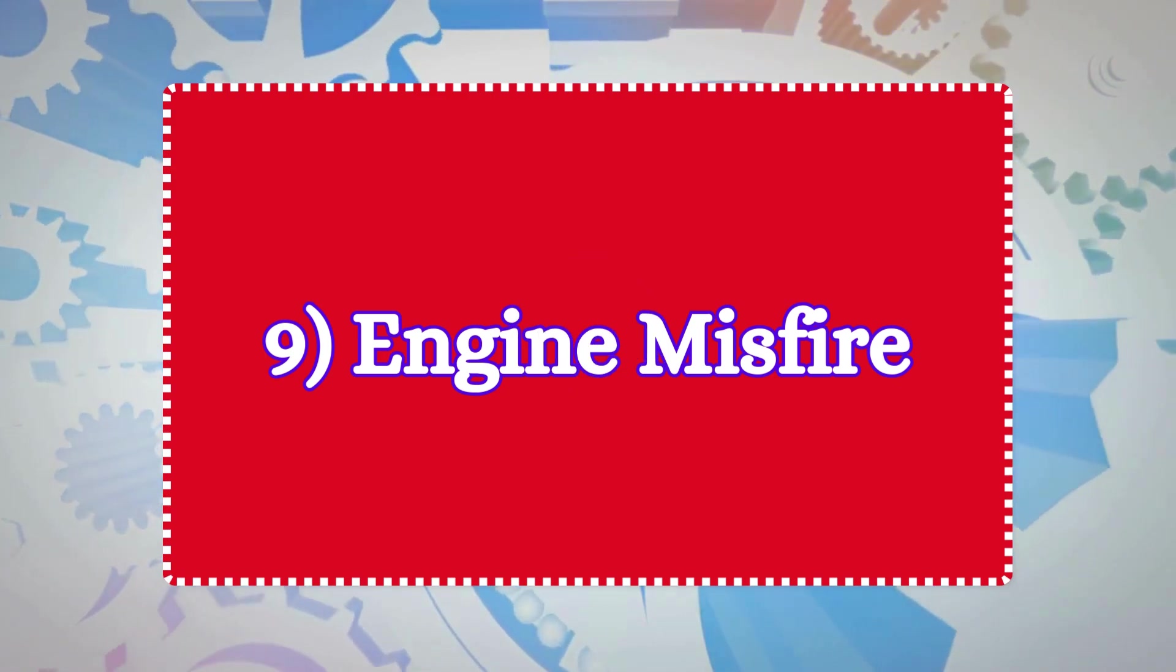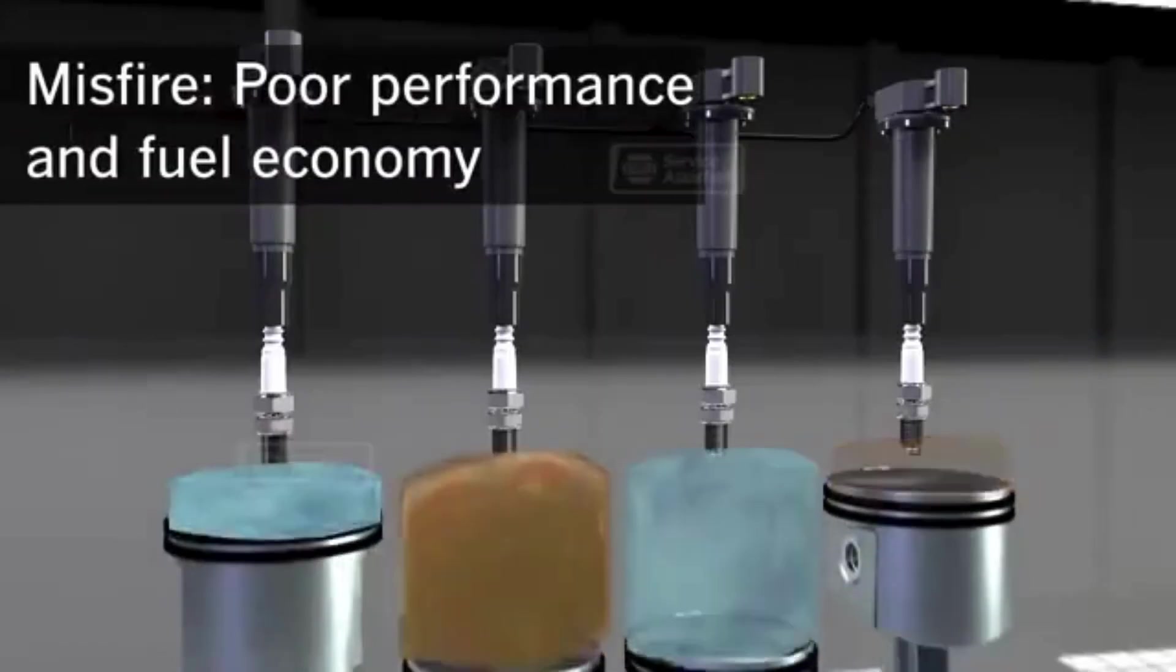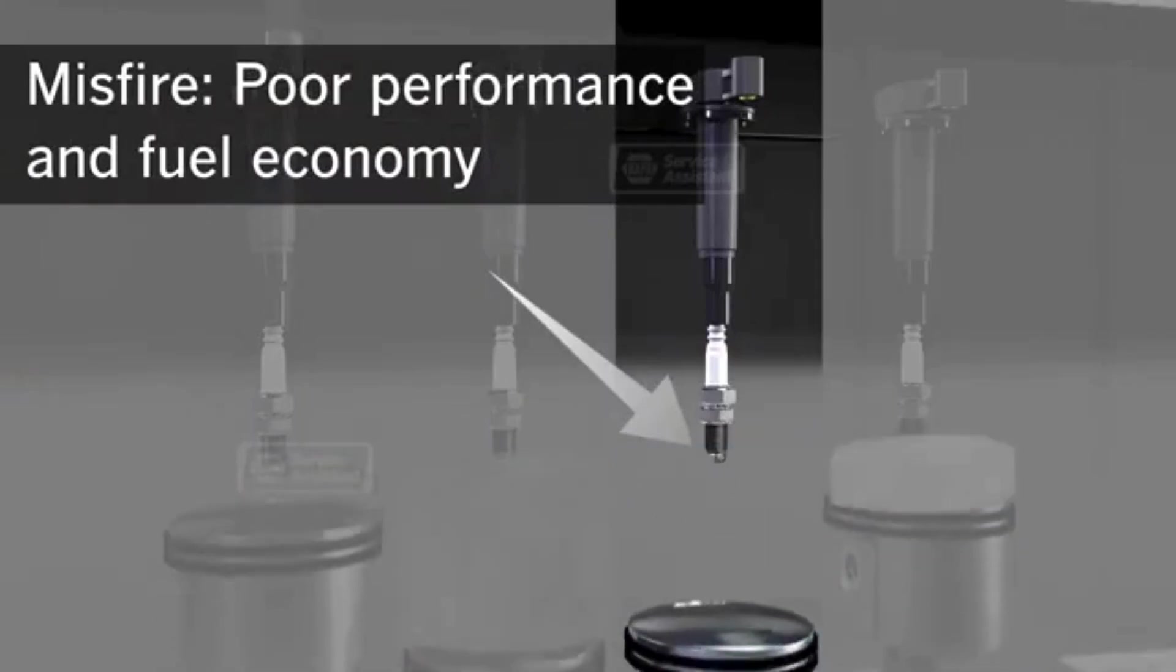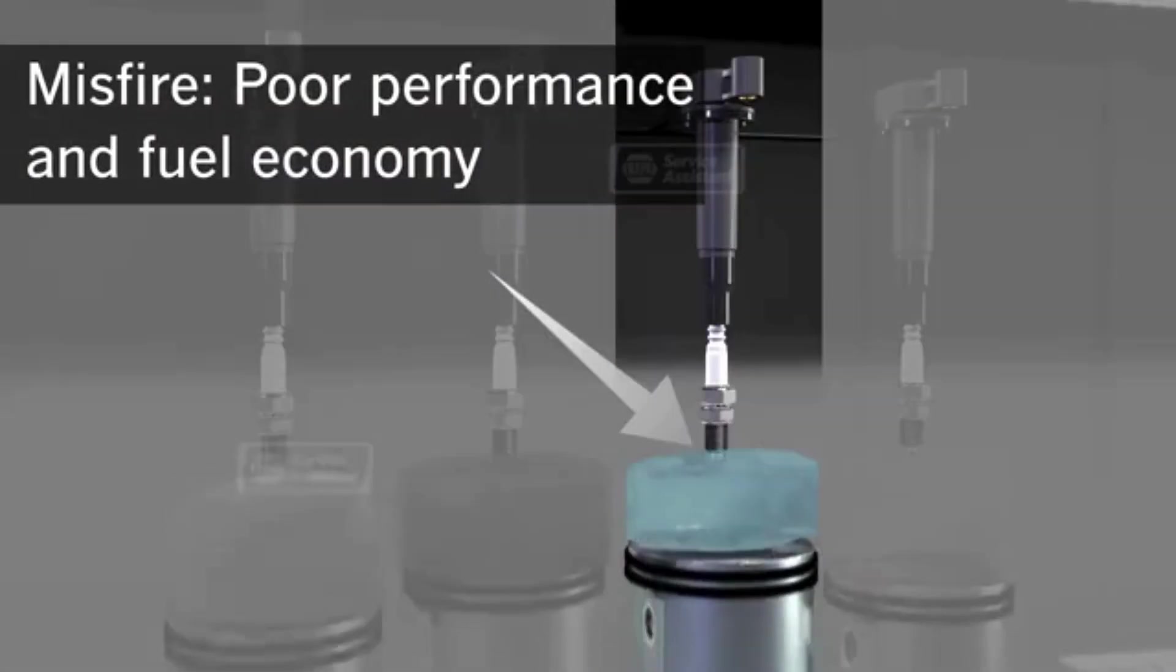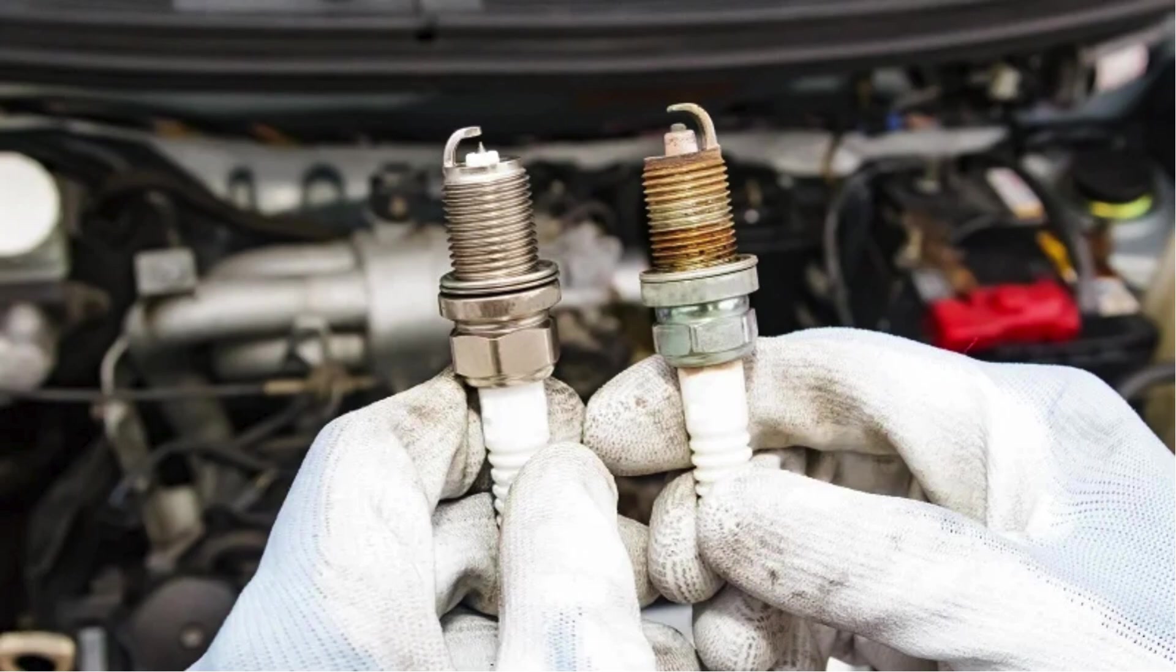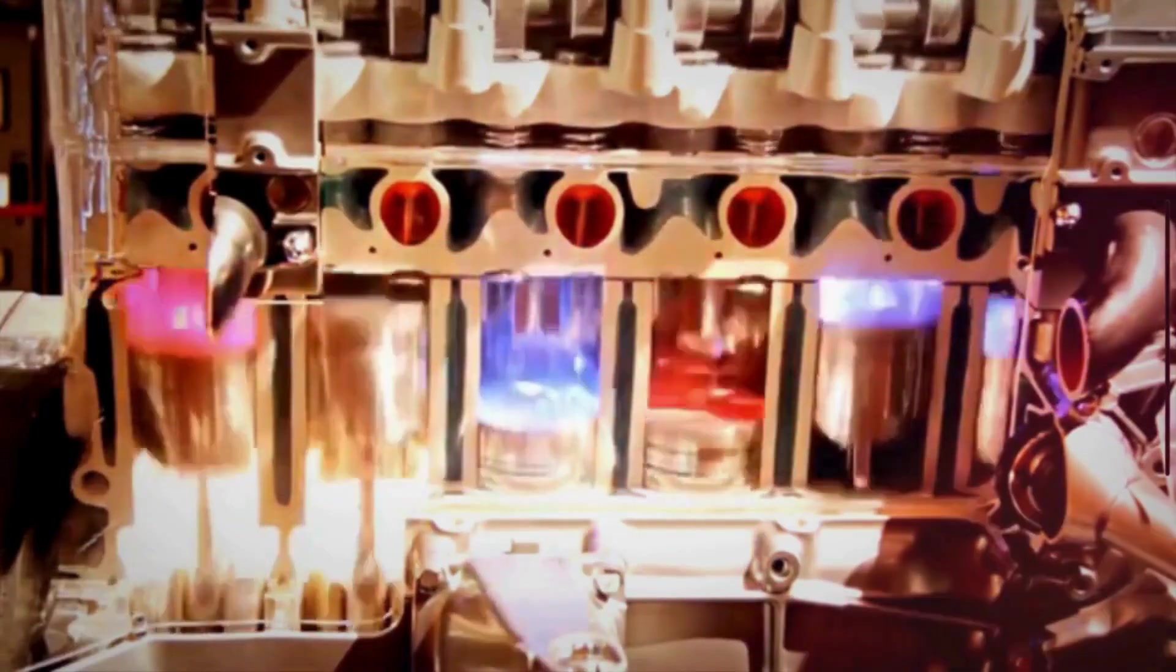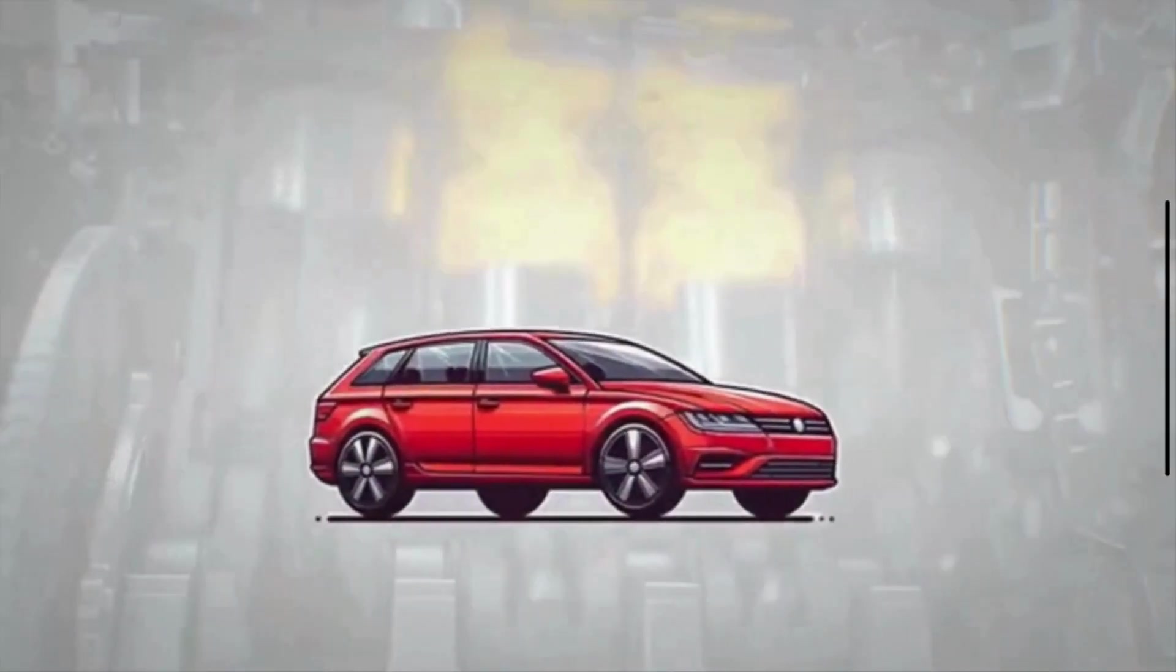9. Engine Misfire. A misfire occurs when one or more cylinders in the engine fail to combust the air-fuel mixture properly. This can be caused by issues like faulty ignition coils, bad spark plugs, or fuel delivery problems. Misfires lead to uneven engine operation, causing jerking during acceleration.